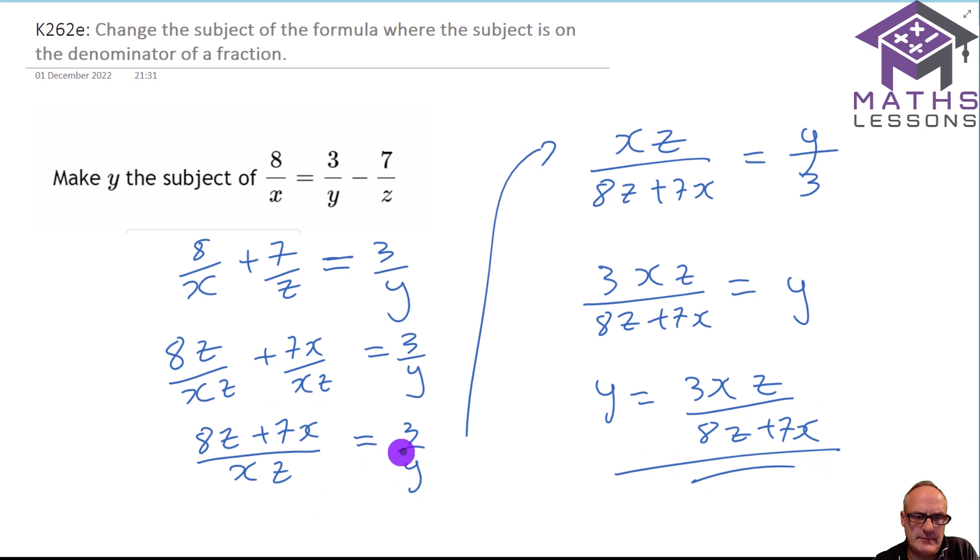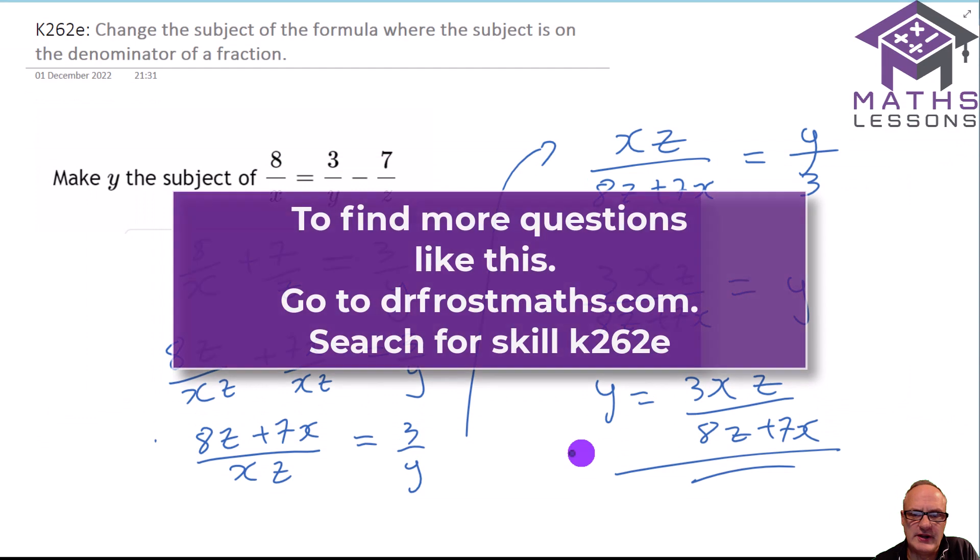Now, another way we could have done it back at this stage is we could have multiplied throughout by y and divided by this fraction. And if we're dividing by this fraction, it's just the same as timesing by the reciprocal. So we're just times by this. And you'd end up with exactly the same result if you did it that way. So either way, it's perfectly okay to get our answer.